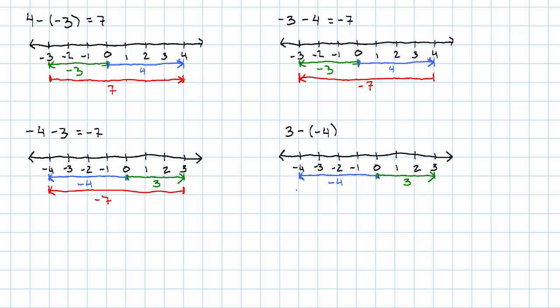The other way around, 3 minus negative 4, start at the end of negative 4, go to the end of 3. That's positive 7 again.